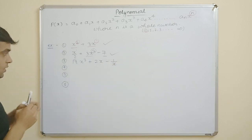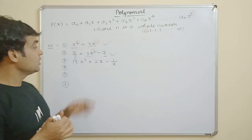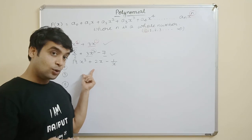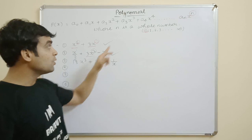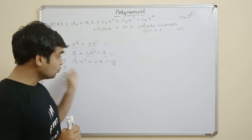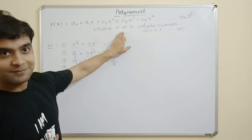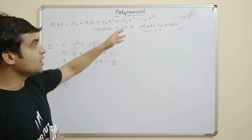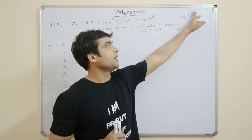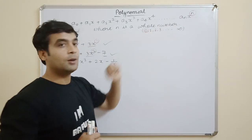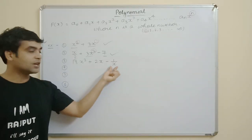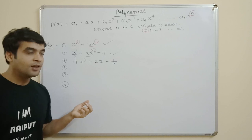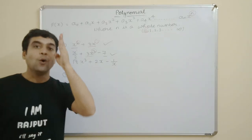Let's take another example: √3x³ + 2x - 1/x. Throughout the algebraic expression, you have to check every term to see if the variable's power is a whole number. This is our general definition. Every term must follow the definition: the variable's power must be a whole number.